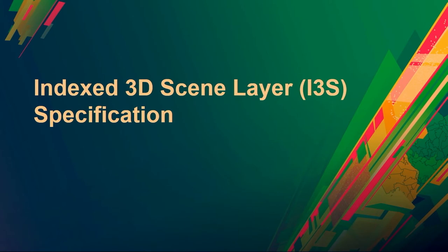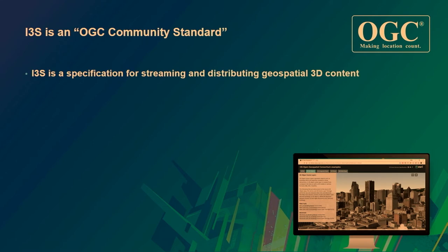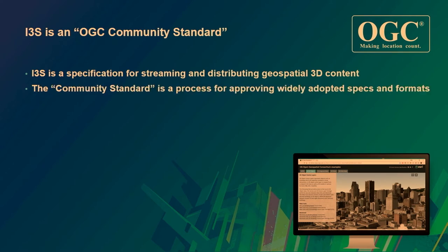Now we get to talk about I3S, which stands for Indexed 3D Scene Layer. This is the data source for scene layers, and we've made a lot of updates recently to the specification. I3S is an OGC community standard — OGC stands for the Open Geospatial Consortium, a voluntary consensus and standards organization. I3S is a specification for streaming and distributing geospatial 3D content. The community standard process approves widely adopted specs and formats, and getting this done was a team effort by Esri, our partners, customers, and other interested industry parties.